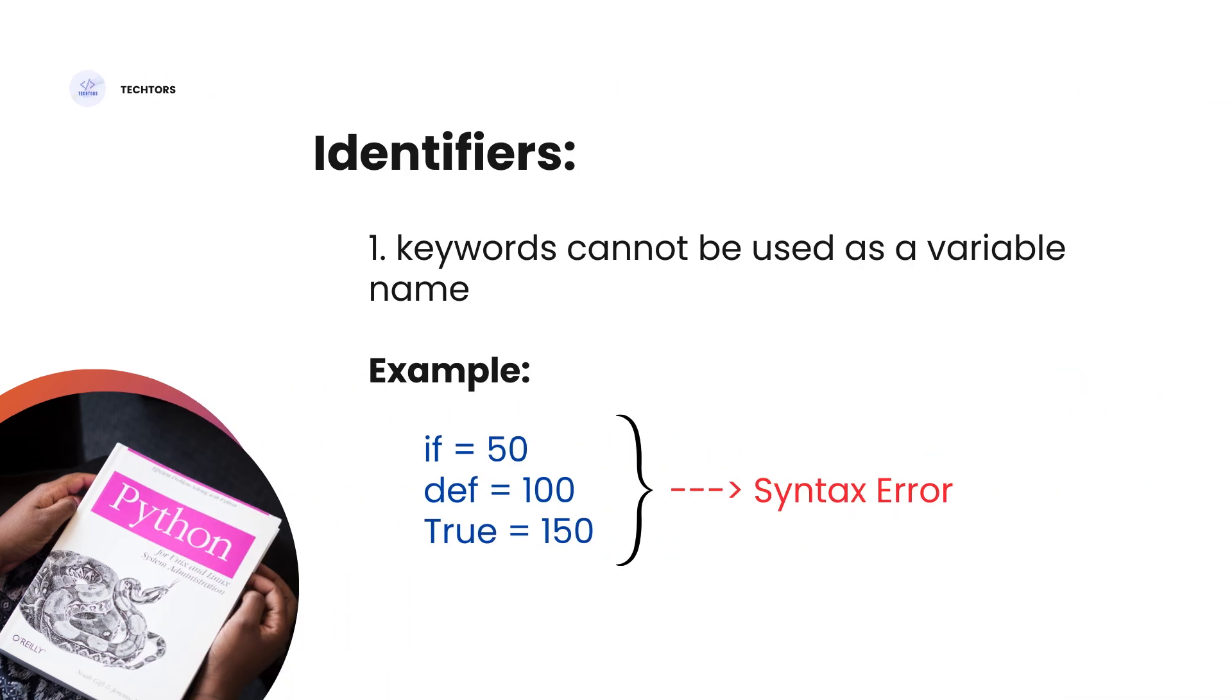Let's look at the first rule. Keywords cannot be used as a variable name. Now, there are many keywords in Python. If you use keywords as a variable name, it will give a syntax error. You can click on the i button to see the keywords.